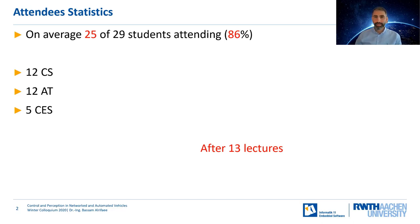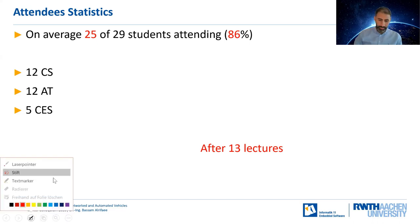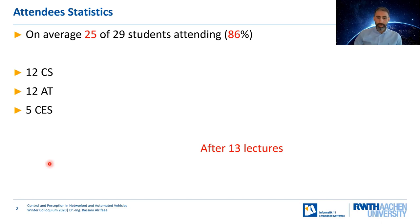This was after 13 lectures — today isn't in the statistics, of course. Here you see the distribution of study programs: we have 12 CS, 12 AT, and 5 CES students.